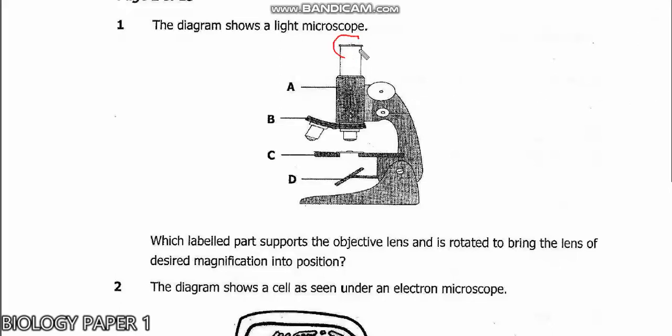This here on top is the eyepiece. This is the objective lens, even this one is the objective lens. This is the mirror, and this is the stage where you put the specimen. The mirror reflects light to pass up to where your eye is. Which part supports the objective lens and is rotated? The answer is B. Since I said this is objective lens, these are two objective lenses, so this part here is what is rotated.